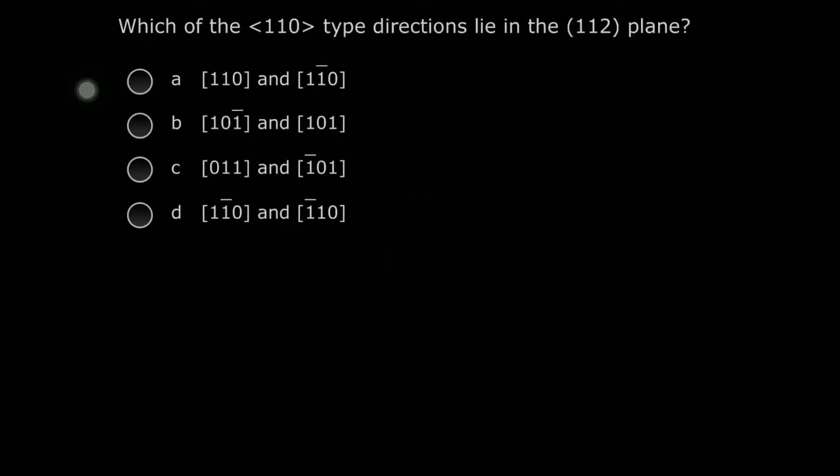Good evening. Let's solve this problem that is based on the Miller indices. The question is: which of the [1 1 0] type directions lie in the plane (1 1 2)?